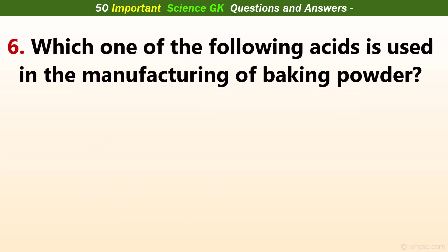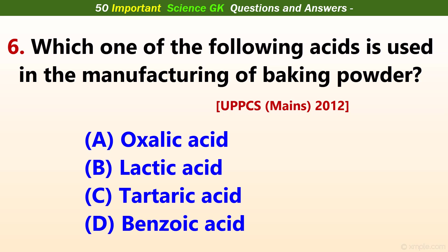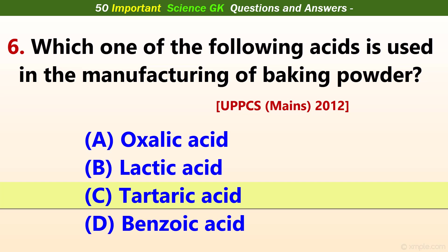Which one of the following acids is used in the manufacturing of baking soda? Answer C: Tartaric acid.